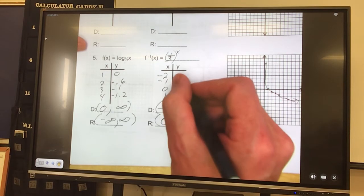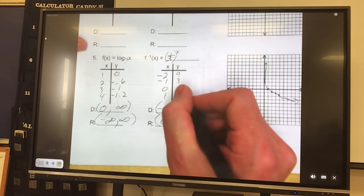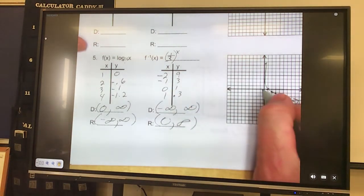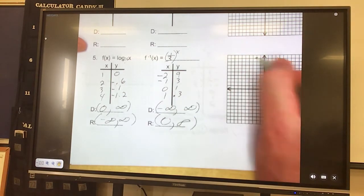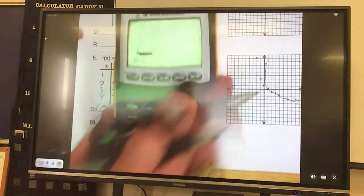So negative 2 came out to 9, negative 1 is 3, zero is 1, one is 1 third, which equals 0.3. So over negative 2 up 9, put a point. Over negative 1 up 3, 1, 2, 3, put a point. Over 0 up 1, put a point. Over 1 up 0.3.